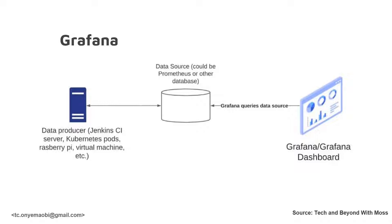Using a data source explanation from Tech and Beyond on YouTube: you can have a data producer like Jenkins, a CI server, Kubernetes, Raspberry Pi, or virtual machines — data flowing in and out of data sources as defined in your Grafana environment. In our case, we are focusing on Prometheus, which will pull that data. All Grafana queries are made to the data source and then presented in a visualization dashboard.